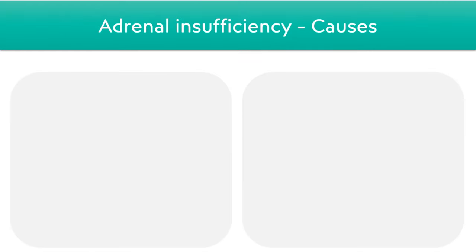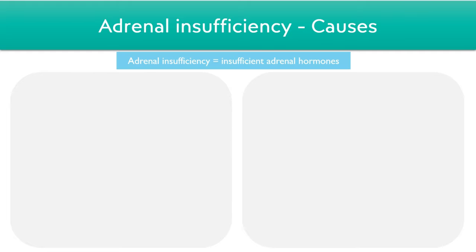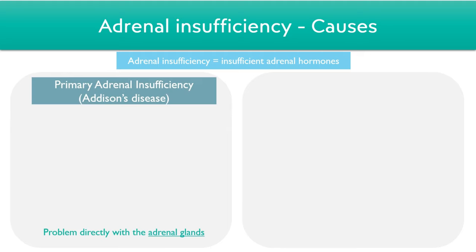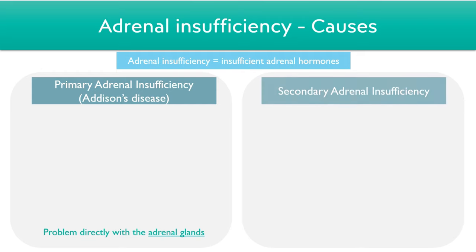The entire purpose of the short synactin test is to diagnose and find a cause behind adrenal insufficiency, which is a condition involving reduced levels of adrenal hormones in the blood. Broadly speaking, this can be divided into primary adrenal insufficiency, where there's a problem directly with the adrenal glands themselves, or secondary adrenal insufficiency, where there's a problem with the anterior pituitary gland. There can be other causes as well, such as genetic factors or withdrawal of steroid usage, but this video will mainly focus on these two causes.